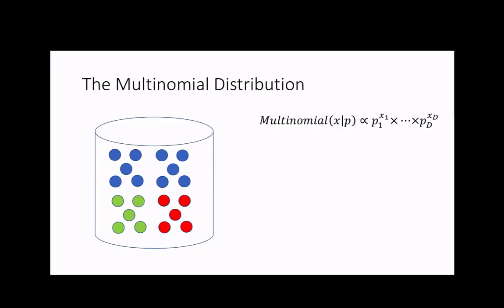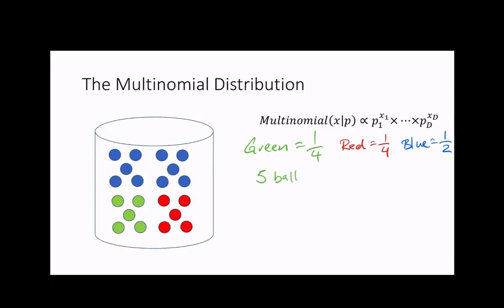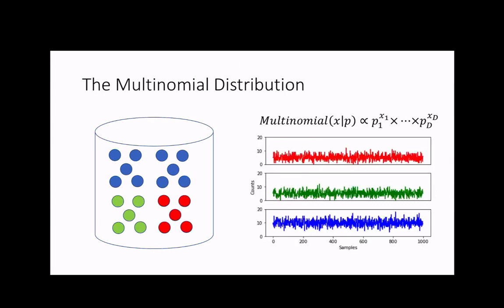What do I mean by a multinomial distribution? Suppose we are looking at a bucket with just three colors, where each color represents a species and each ball represents a microbial individual. If the proportions of microbes are one-fourth, one-fourth, and one-half, and if I draw 20 balls, I should expect roughly 5 red, 5 green, and 10 blue balls. If I repeat this sampling process many times, it's not very common to get only red, only green, or only blue balls.